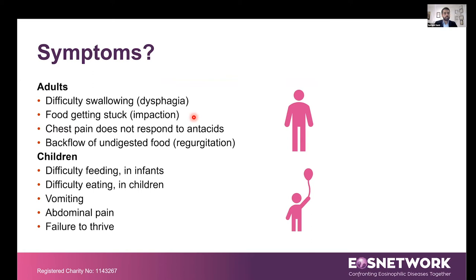What are the symptoms? The narrowing in the gullet leads most commonly to difficulty swallowing, or dysphagia — food getting stuck — also called impaction. Chest pain that does not respond to antacids is also common, as well as backflow of undigested foods. This is more common in adults. In young children, it tends to present differently — more non-specific symptoms such as difficulty feeding, difficulty eating, vomiting, abdominal pain, or failure to thrive.